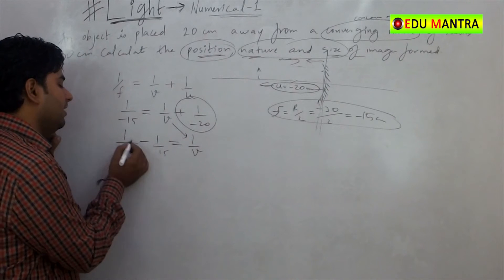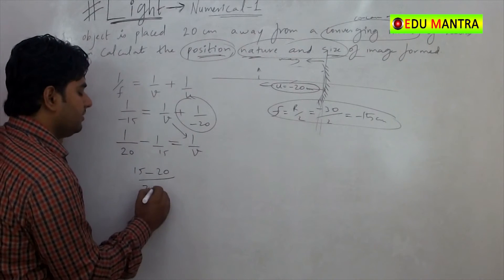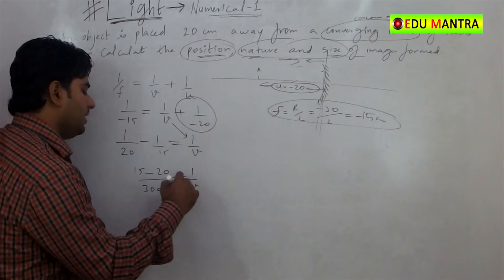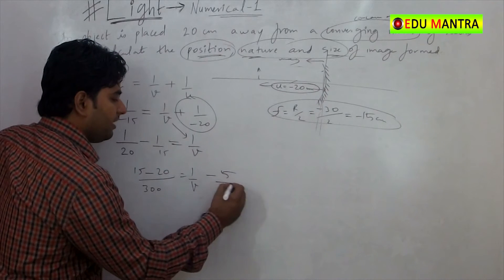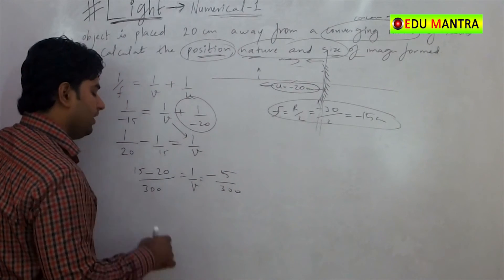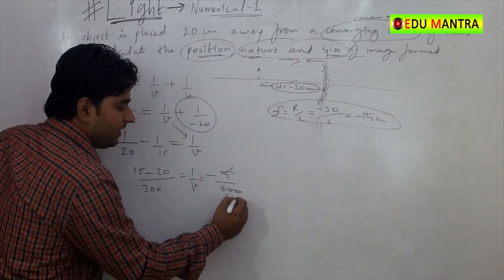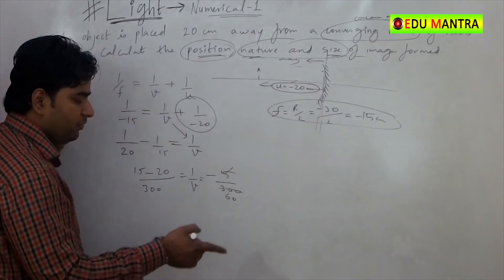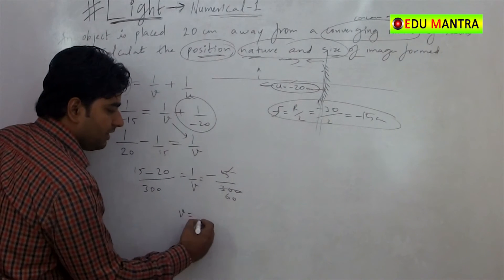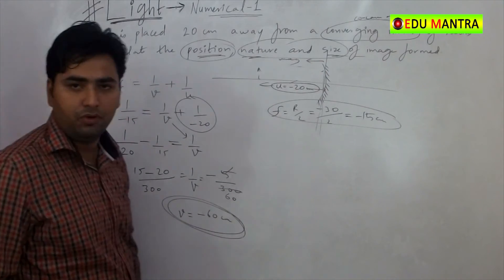Cross multiply: 15 minus 20 by 300 is 1 by v. That is minus 5 by 300, which is minus 1 by 60. If we revert this, 1 by v, then v is minus 60 cm. So that's your position of the image.